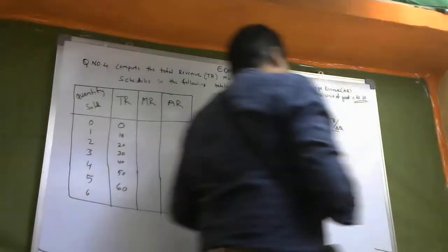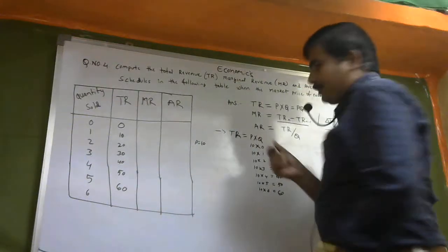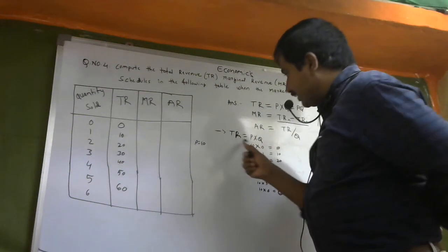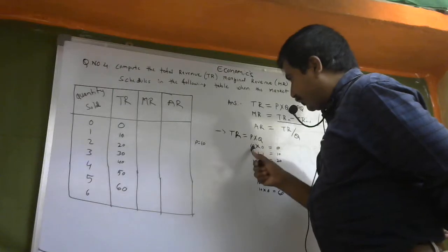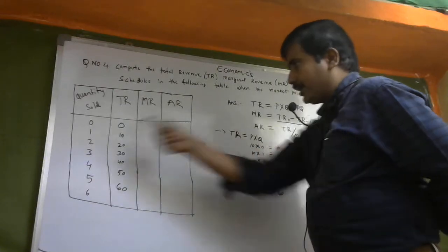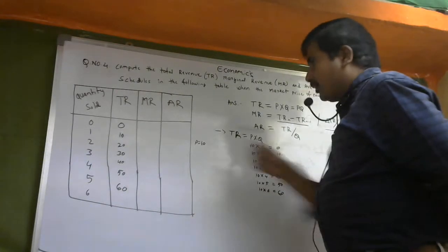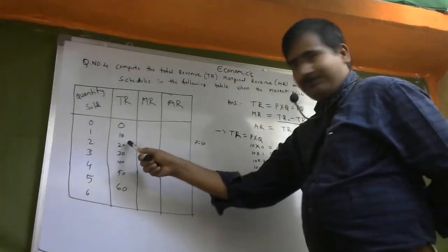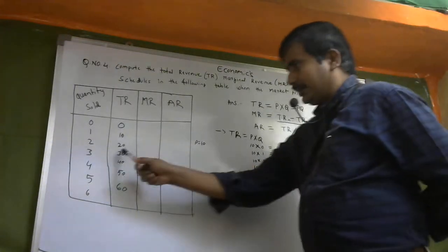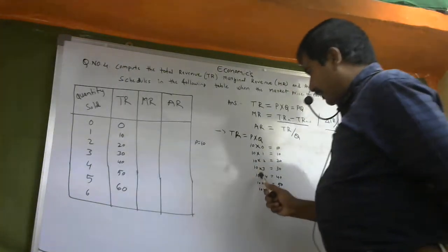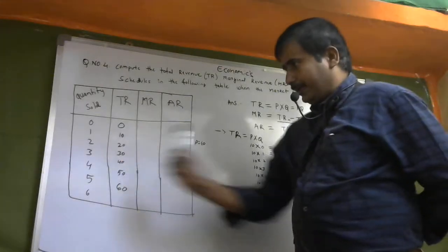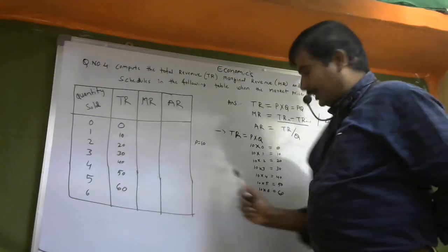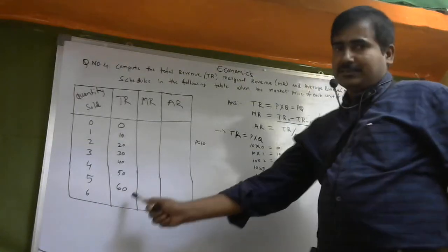So TR: 10 into 0 is 0, 10 into 1 is 10, 10 into 2 is 20, 10 into 3 is 30, 10 into 4 is 40, 10 into 5 is 50, 10 into 6 is 60. So this is the TR column confirmed.